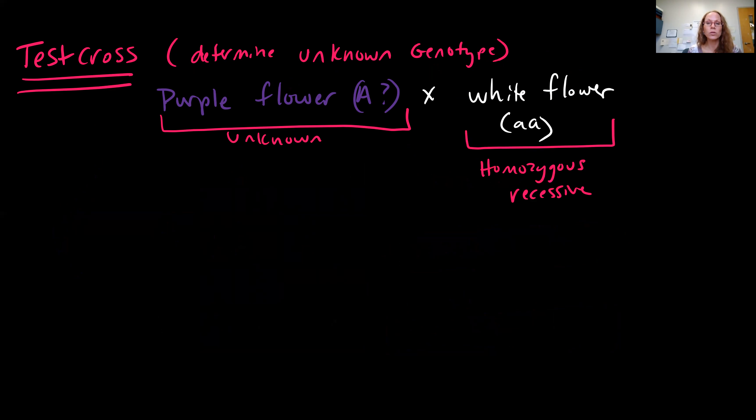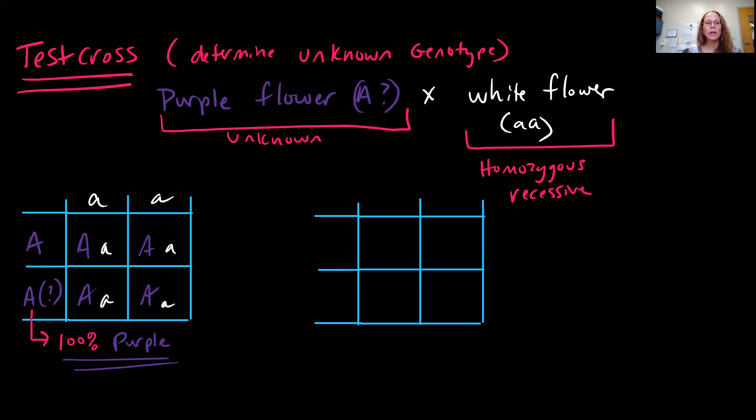You cross your unknown by a homozygous recessive. So, if we're still sticking with flower color, we're going to cross our purple flower times our white flower, and there's two possible outcomes. If you have your unknown is homozygous dominant, then you will see every one of your offspring 100% having purple flower color. And you can see why in your Punnett square.